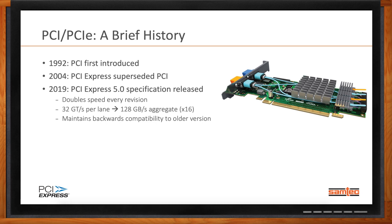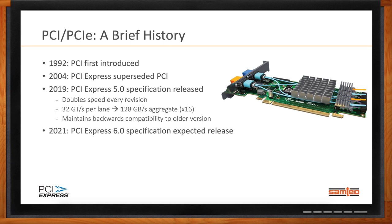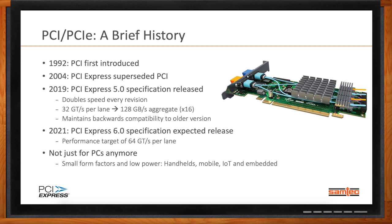The current version also maintains backward compatibility to previous specifications. PCI SIG, the standards body responsible for PCI Express, is targeting PCIe 6.0 being released next year, with a target of 64 gigatransfers per second per lane. From Samtech's perspective, PCI Express isn't just for PCs, servers, and data centers anymore. We see emerging small form factors and low-power applications including handhelds, mobile, IoT, and especially embedded computing. We're also excited to talk about PCI Express over fiber for long-reach applications.